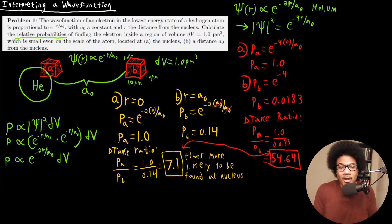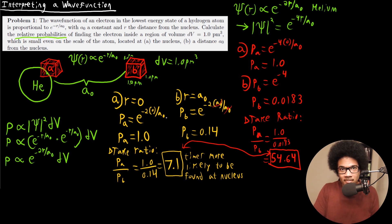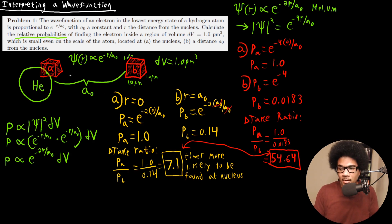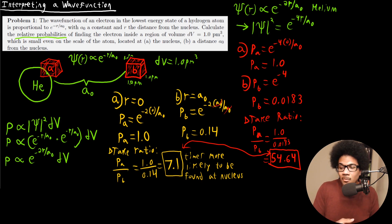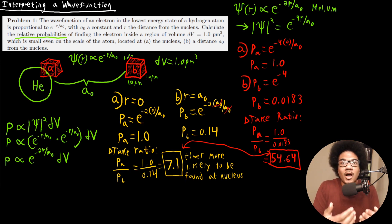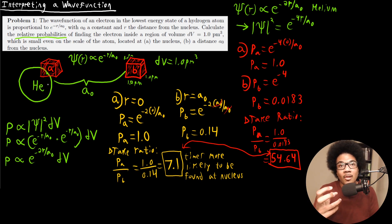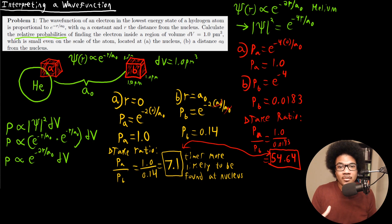Does this fit with our chemical intuition? It should. In the case of helium, you have an extra proton, so the electron has a greater attraction to the nucleus in helium than in hydrogen. The electron is far more likely to be found near the nucleus in helium than in hydrogen. This result from quantum mechanics gels well with our chemical intuition — in helium, the electron is more likely to be found near the nucleus because of the larger electrostatic attraction due to the added proton. This is how you can interpret a wave function and get qualitative information about the location of particles.